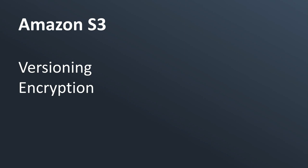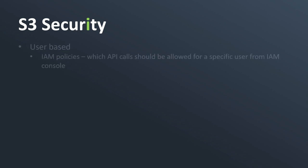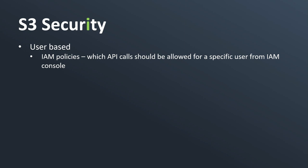First, let's talk about Amazon S3 security. It's very complex, but first you have user-based security. Our IAM users have IAM policies, and they authorize which API calls should be allowed. If our user is authorized through an IAM policy to access our Amazon S3 bucket, then they will be able to do it. Then we have resource-based security.